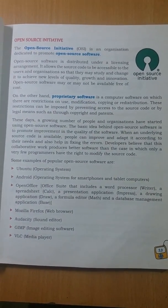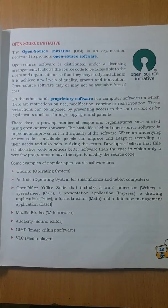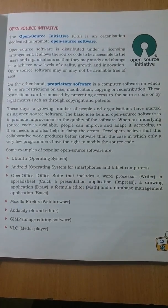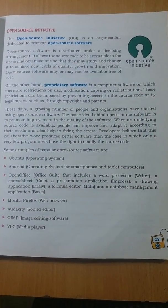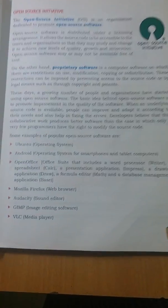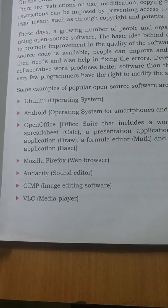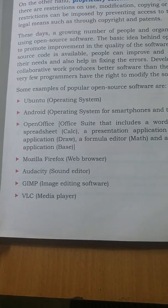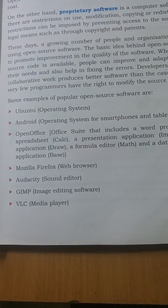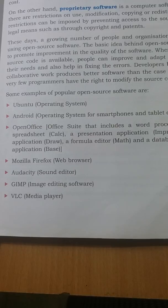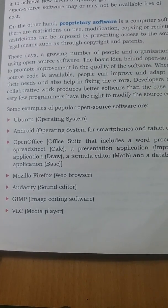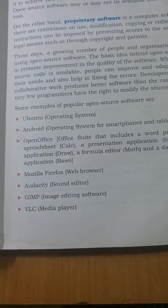Open source software are being used in our ninth and tenth standard curriculum. Proprietary software are software where there are restrictions on modifications or copying. Some examples of open source software are Ubuntu operating system, Android, and OpenOffice — including Writer, Calc, Impress, and Base, which you will study in your classes.